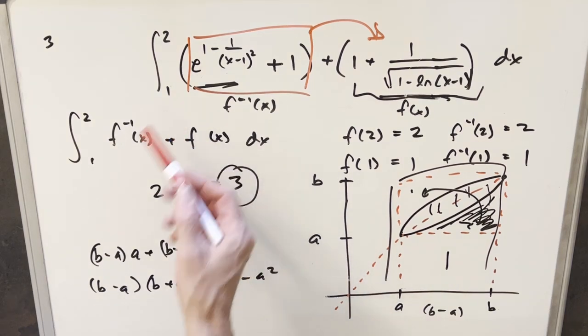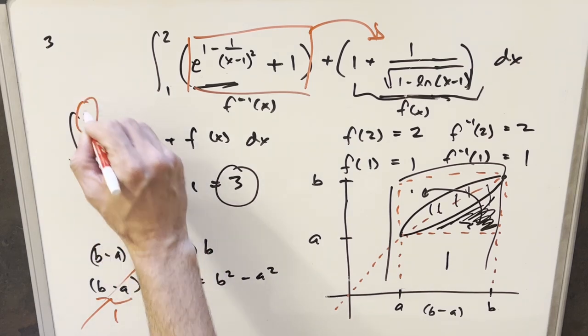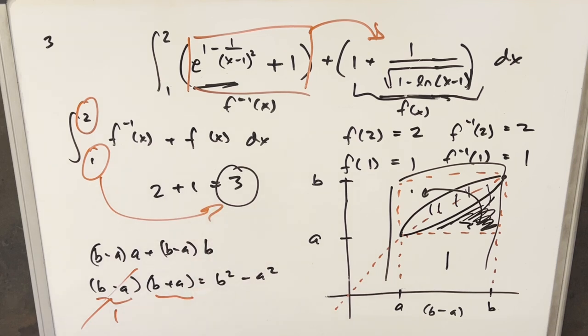But you'll notice in the example we were given, this B minus A is just 1. So basically, in the actual exam, the way they got the answer in two seconds is they just took the upper bound B and the lower bound A, added them together and got three. And they did it in like two seconds.